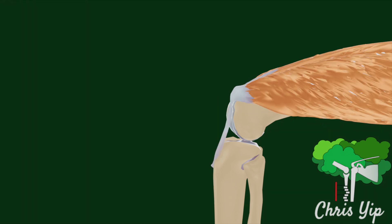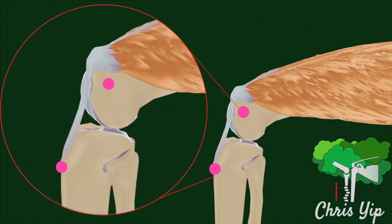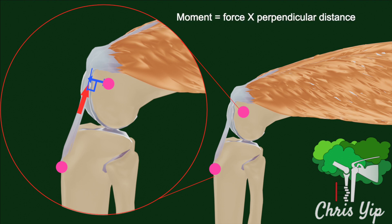Let's first imagine a scenario where the patella doesn't exist and the quadriceps tendon inserts directly at the tibial tuberosity. When a tensile force is exerted by the contraction of the quadriceps, the orientation of this force means that the perpendicular distance between its line of action and the centre of rotation is very small. Looking back at the equation for a moment, this short perpendicular distance would mean that a very large force would be required to extend the knee.